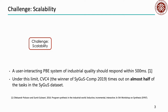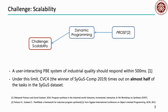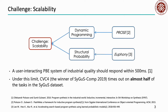To optimize the performance of programming by example, many approaches have been proposed. Dynamic programming, represented by the PROSE framework, and structural probability, represented by Euphony, are two important techniques among them.